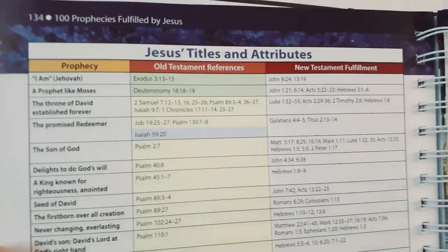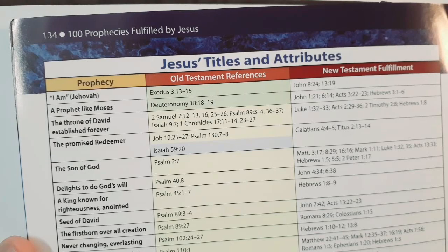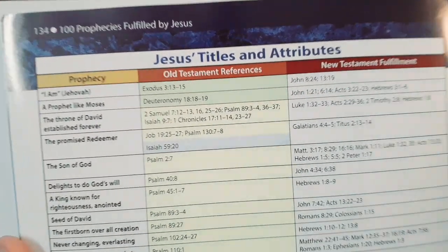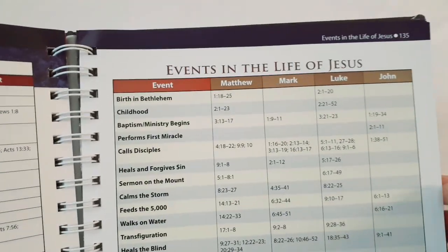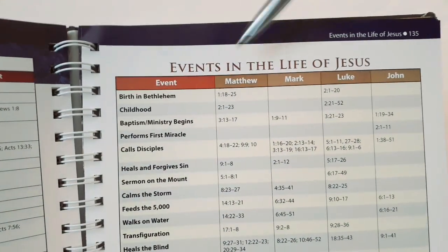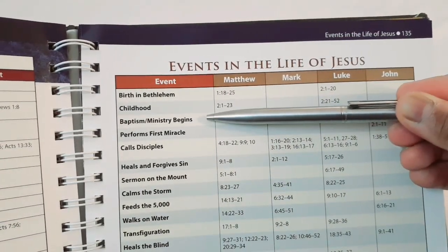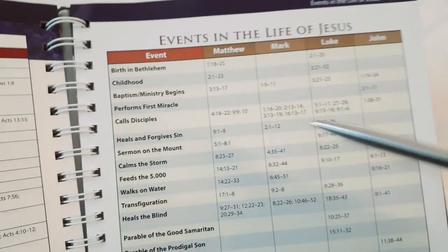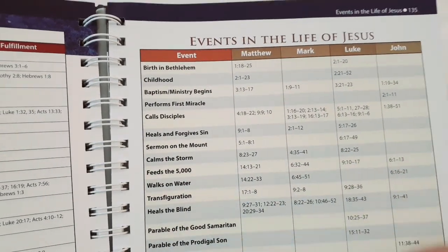It goes on to the titles and attributes of our Savior Jesus Christ — Old Testament references and New Testament references. Then it gives a breakdown from the four Gospels — Matthew, Mark, Luke, John — covering events in the life of Jesus: the birth, childhood, baptism and ministry. He performs the first miracle at Cana, calls the disciples, heals, forgives, Sermon on the Mount, calms the storm, feeds the 5,000-plus, walks on water, the Transfiguration, heals the blind, and lots of parables.